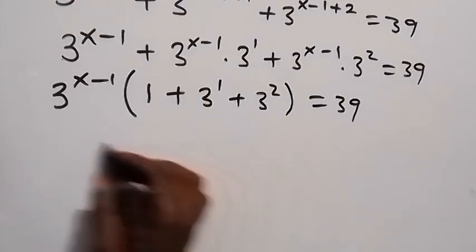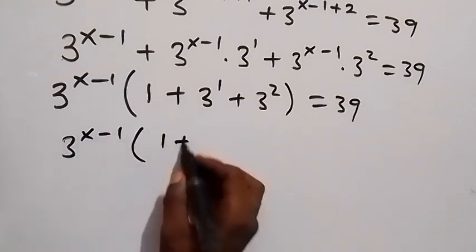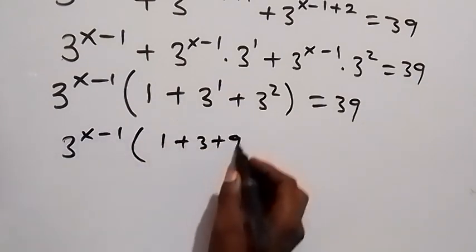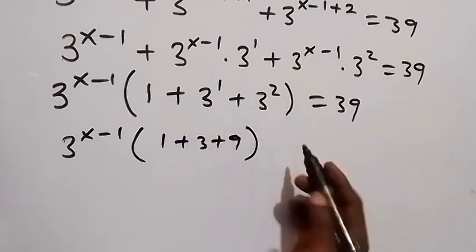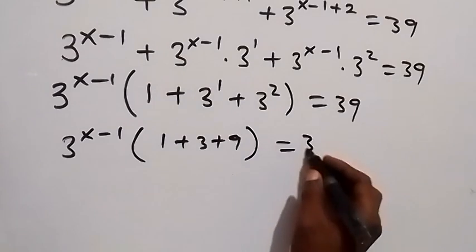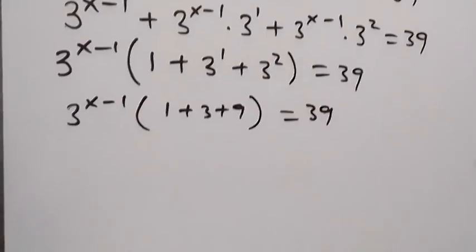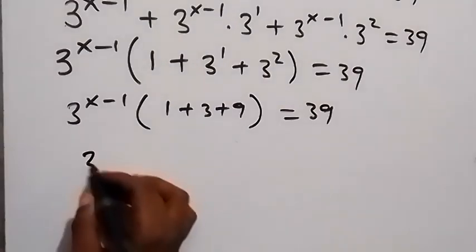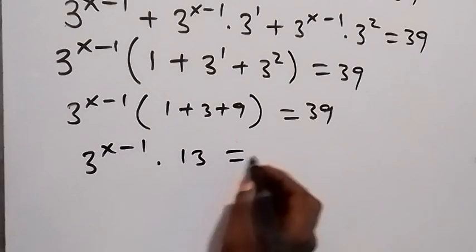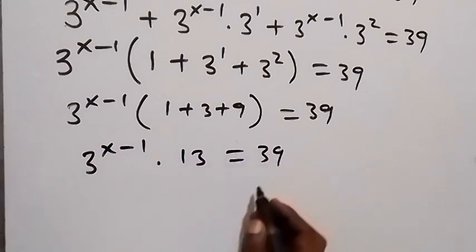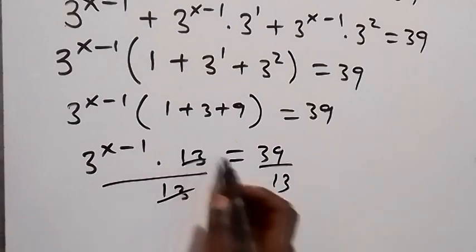We simplify what is inside the bracket: 3 raised to power x minus 1, times bracket 1 plus 3 plus 9. That gives 1 plus 3 plus 9 equals 13. So we have 3 raised to power x minus 1 times 13 equals 39. Dividing both sides by 13, the 13s cancel and we get 3 raised to power x minus 1 equals 3.